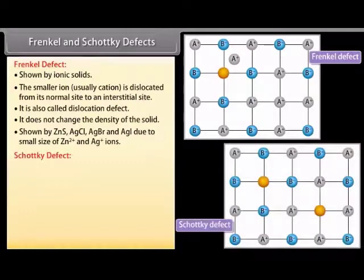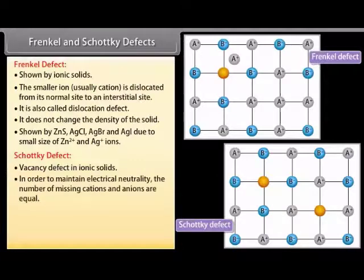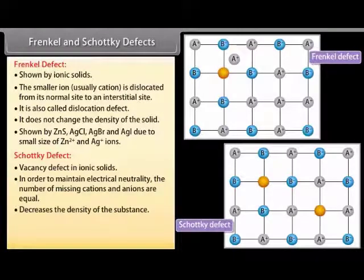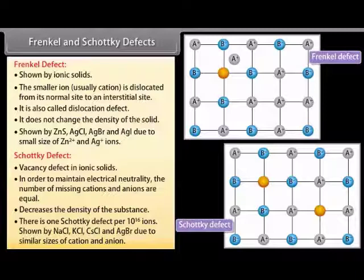Schottky defect is a vacancy defect in ionic solids. In order to maintain electrical neutrality, the number of missing cations and anions are equal. It decreases the density of the substance. There is one Schottky defect per 10¹⁶ ions. Shown by NaCl, KCl, CsCl, and AgBr, due to similar sizes of cation and anion.